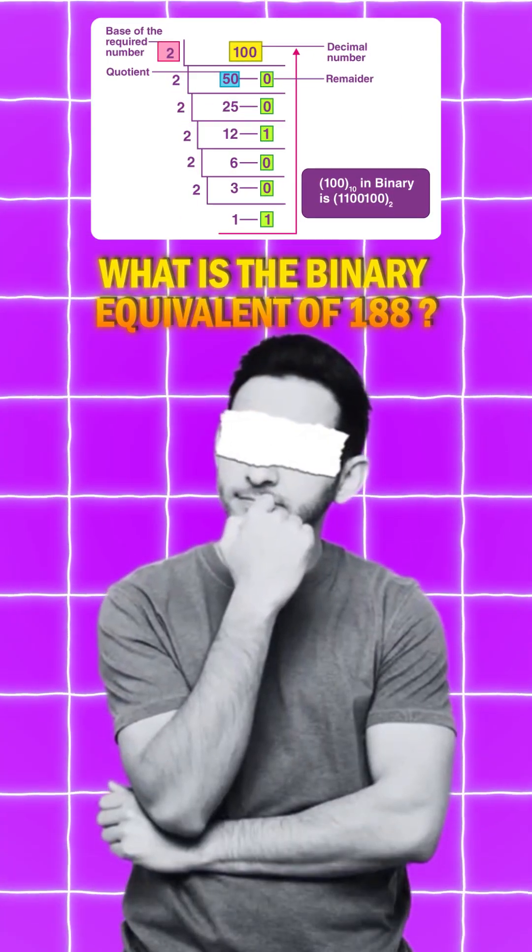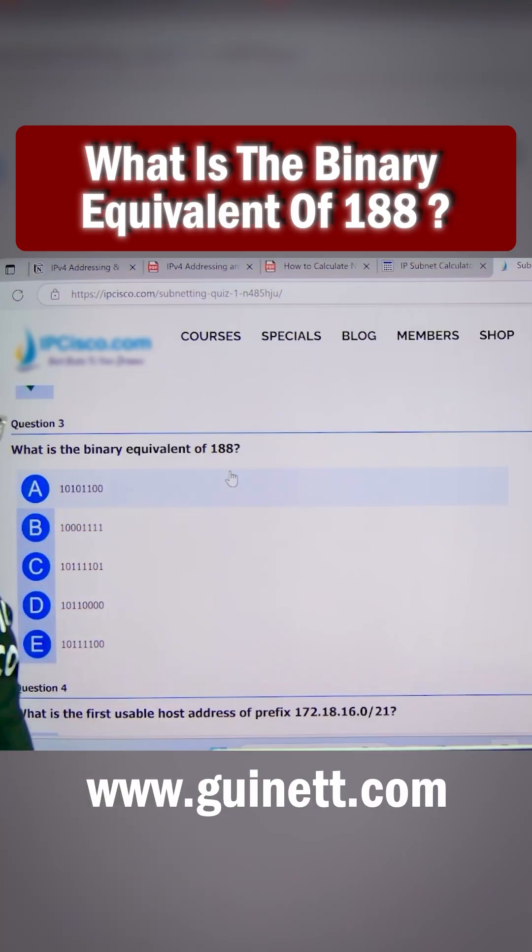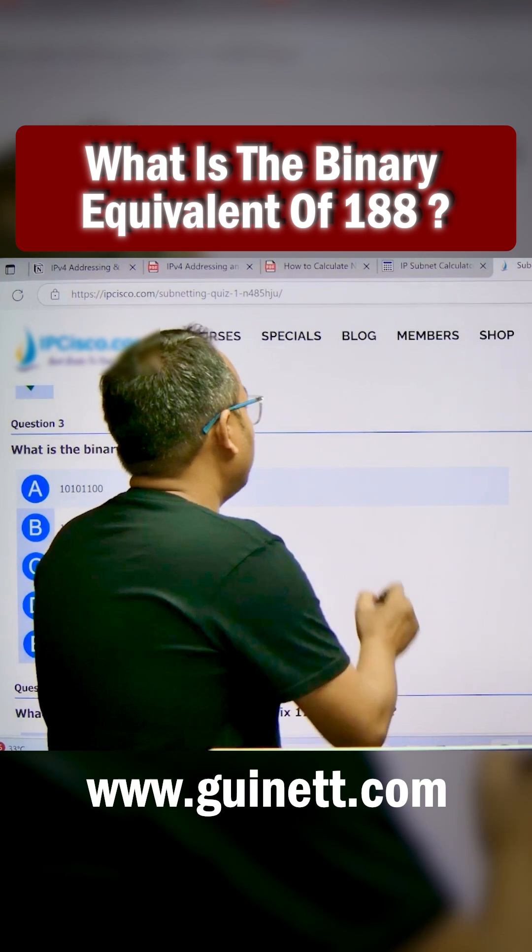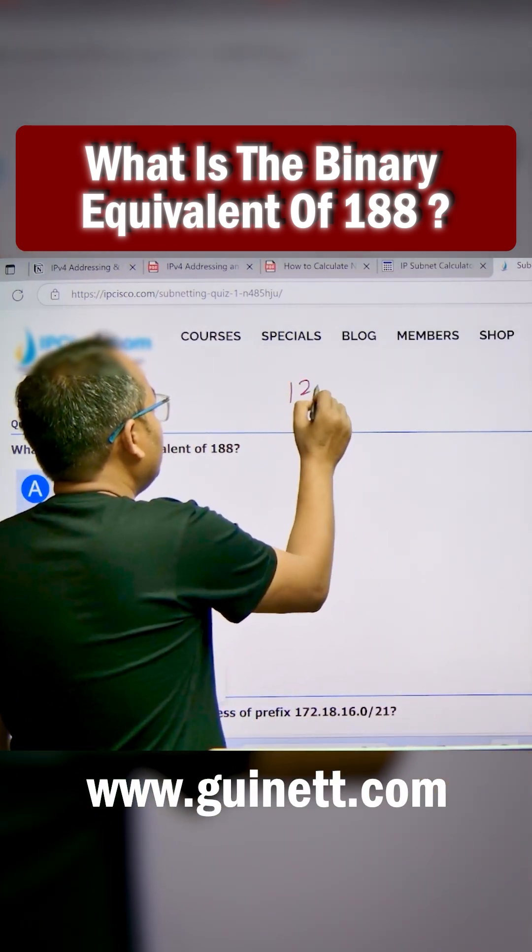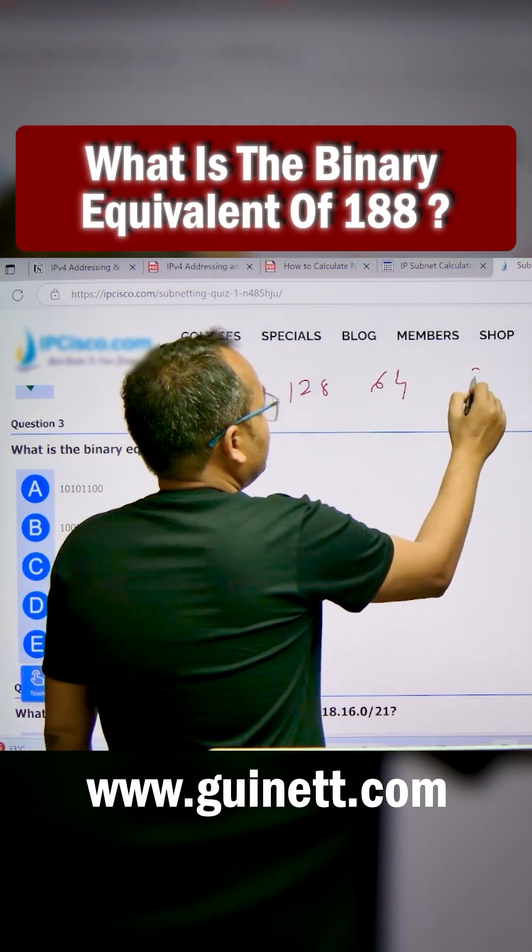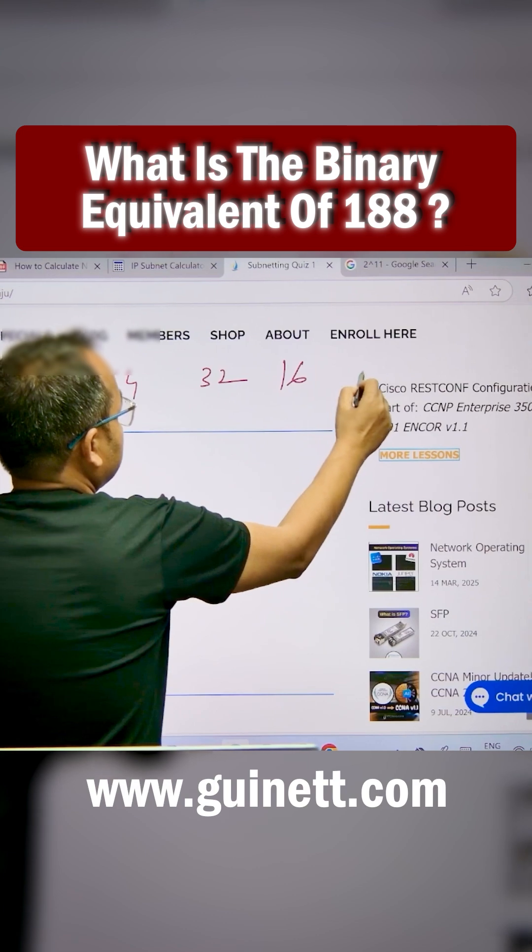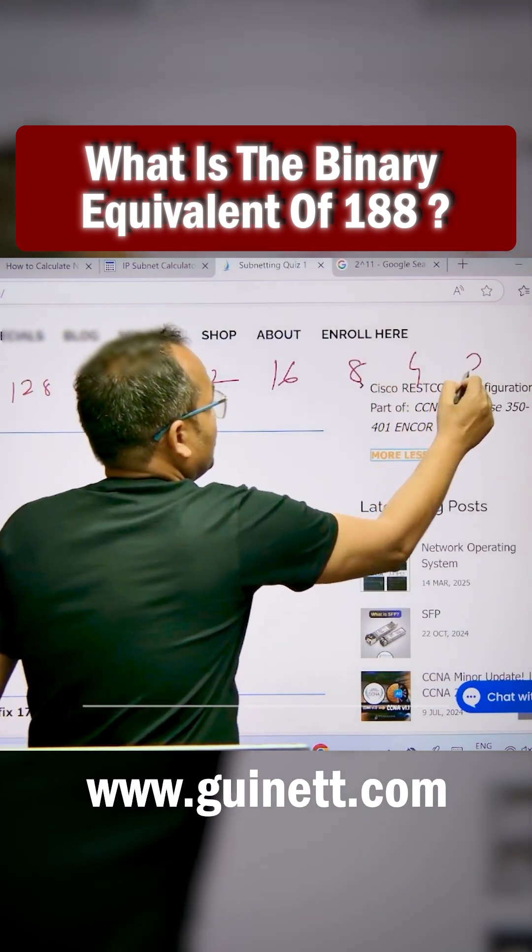What is the binary equivalent of 188? How is it going to be calculated? You have to remember this formula: 128, 64, 32, 16, 8, 4, 2, 1.